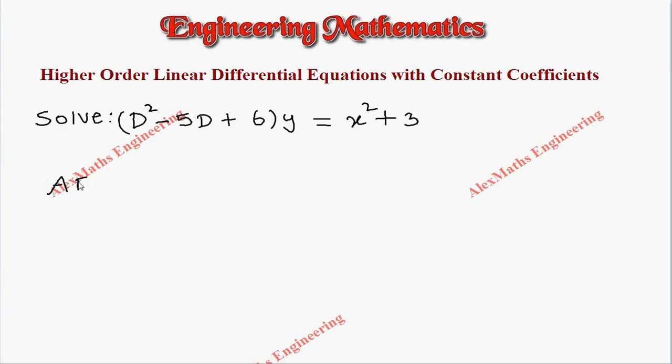The auxiliary equation is m² - 5m + 6 = 0. On factorizing we get (m - 3)(m - 2) = 0. From this we get two values for m, both are real values and they are different values.